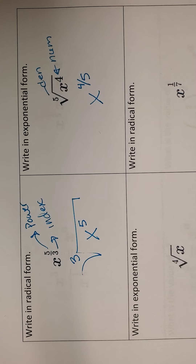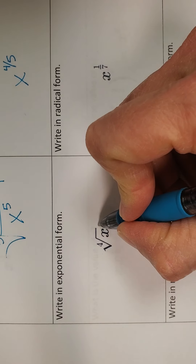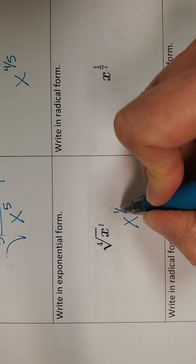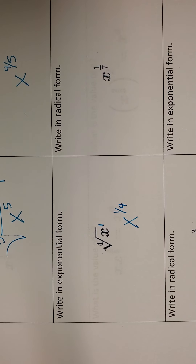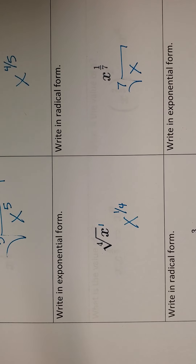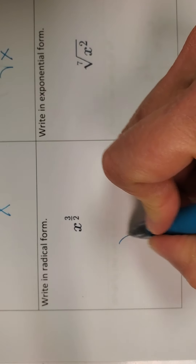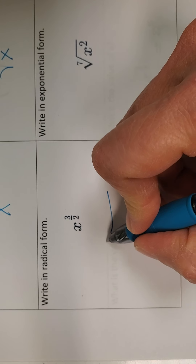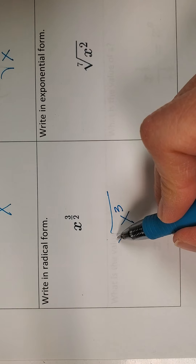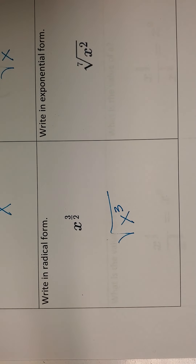If you remember those rules, it's pretty easy. Remember, if there isn't a power, it's always a one. So x to the one-fourth: the index would be the denominator, and I don't have to write a one on the x for the power. Then for the square root of x cubed, that would be a two as the index. You could write a two there, but it's not done when we have a square root.